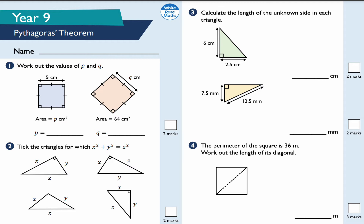We're going to start with question number one: work out the values of P and Q. The length is equal to 5 and the width is equal to 5. The area of this shape is the length times the width. This is a square because all the lengths are the same, so I'm going to do 5 times 5, which is equal to 25 centimeters squared. That will tell me the area of this square — it's simply length times width, or L times L.